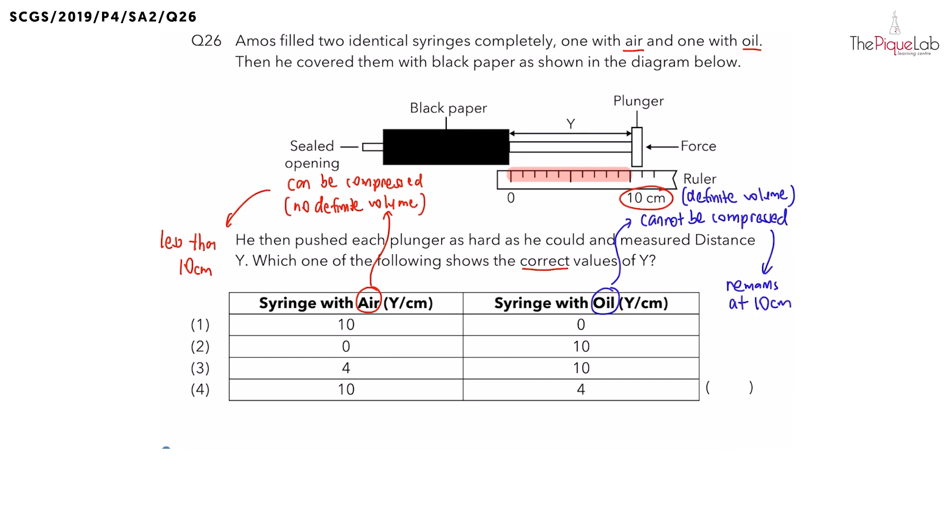So let's look at the options now. We already know the syringe with air will be less than 10 cm. So when you look at the options, which options show you a value less than 10? It will be option 2 and 3. And for the syringe with oil, which options show that it will be 10 cm? It is also 2 and 3.